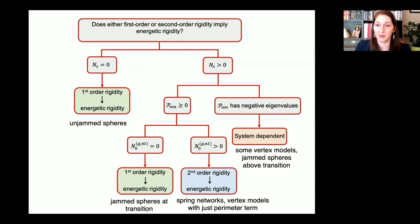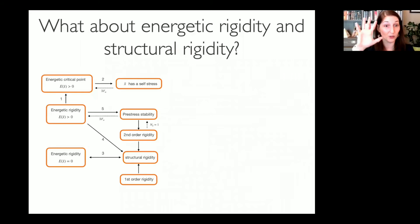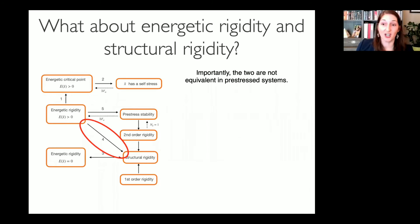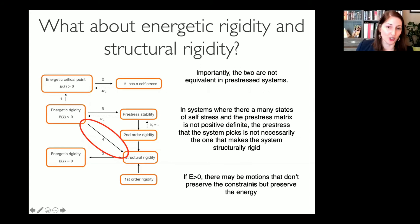We've also connected all of these ideas to the rigidity theory literature on tensegrity structures. Energetic rigidity and structural rigidity are not one-to-one: there do exist motions that don't preserve the constraints but do preserve the energy in some systems. There are also cases where the pre-stress matrix has negative eigenvalues, where we can't yet prove anything — those are open questions.